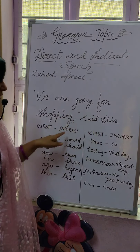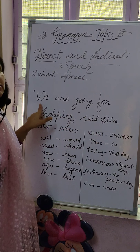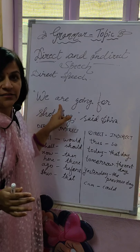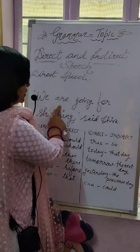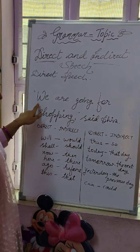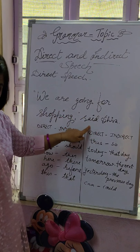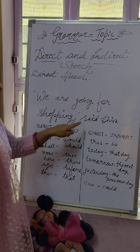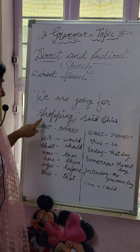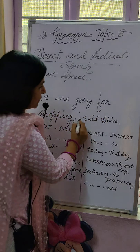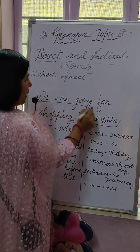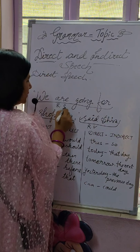Shiva said that they — we change 'we' into 'they.' 'Are' will change into 'were,' as we know that present tense changes into past tense. It is present continuous, 'are going,' so it will change into past continuous. 'That' connects the reported verb and the reported speech. So: 'Shiva said that they were going for shopping.' 'Said Shiva' is the reported verb, and 'we are going for shopping' is the reported speech.